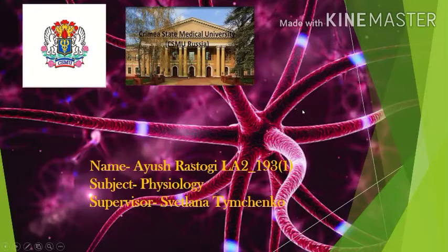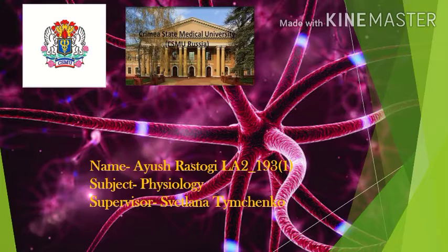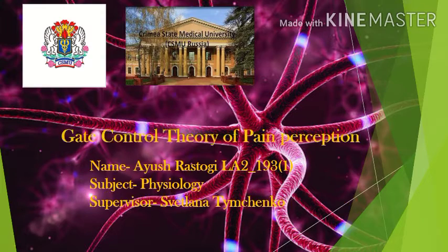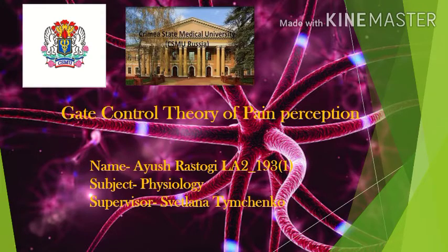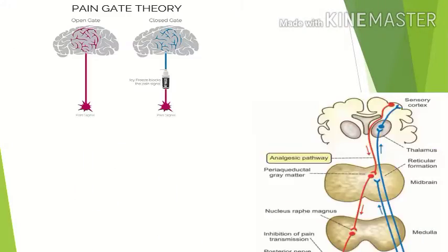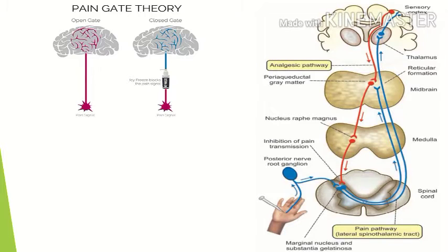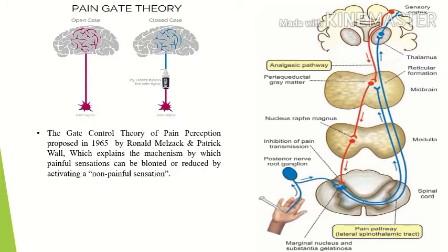Hello everyone, this is Rastogi Ayus from group 1931. My topic is the Gate Control Theory of Pain Perception. This theory was proposed by Ronald Melzack and Patrick Wall in 1965. It explains the mechanism by which painful sensation can be blunted or reduced by activating a non-painful sensation.